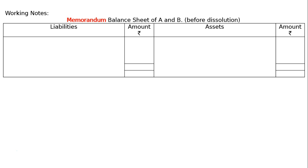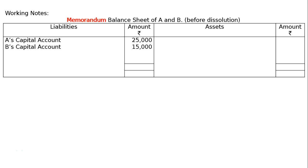A's capital is Rs. 25,000, B's capital is Rs. 10,000, sundry creditors Rs. 20,000, and A's loan Rs. 10,000. Enter these figures just below the information.